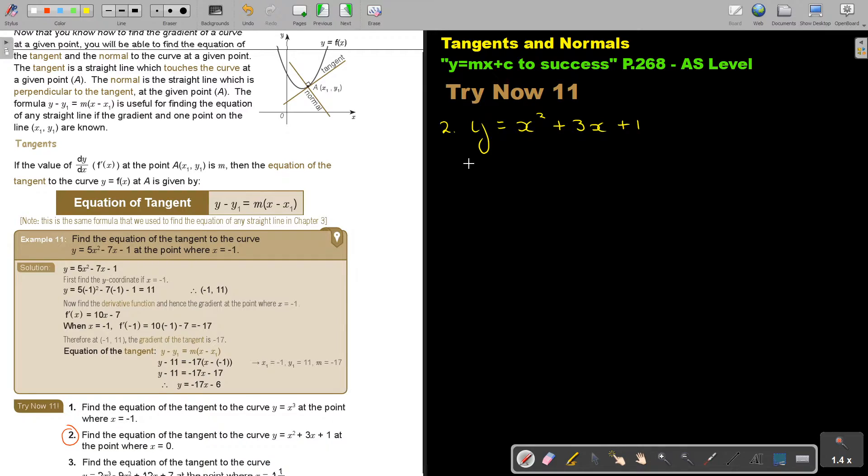So we're going to say when x is zero, the y coordinate is, and we substitute in the original equation zero in the place of x. And what are we going to get? We're going to get one. So therefore the coordinate of the point will be (0, 1). That will be the point where it touches the curve.